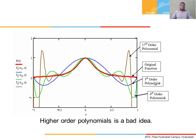Splines are used because for higher-order polynomials, the oscillations are quite high. If we look at the same function f(x), although a set of data points satisfies the function, within that interval there are huge oscillations. So that will give a wrong result. If we interpolate a value within that interval, we will get a wrong result. And that's why higher-order polynomials are a bad idea.